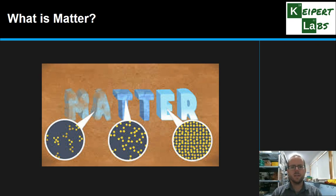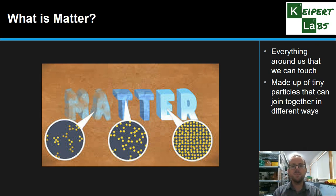So what is matter? Well essentially everything that you can touch, everything you taste, everything you can feel, the air you're breathing right now is called matter. Now we're going to have a closer look at matter in a lot more detail as we go on but essentially it's made up of really tiny particles that can join together in all sorts of different ways. And the different ways that they join together will then help us to decide about the different type of matter that it is.